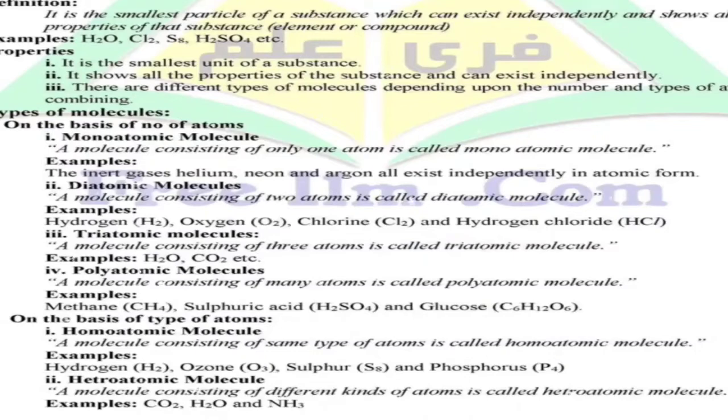First, types of molecules on the basis of number of atoms. If the molecule has one atom, it will be called monatomic molecule. A molecule consisting of only one atom is called monatomic molecule. Similarly, diatomic molecule will consist of two atoms, and triatomic molecule will consist of three atoms.